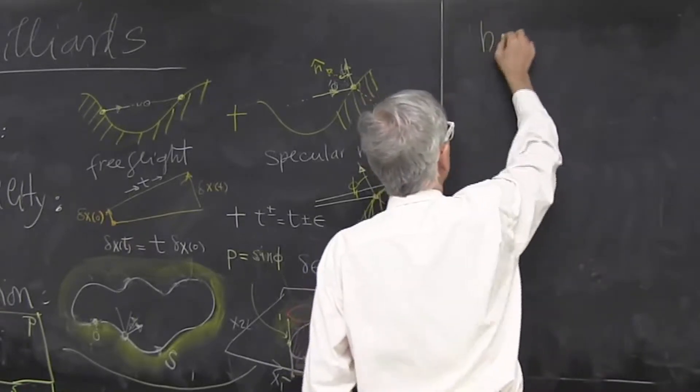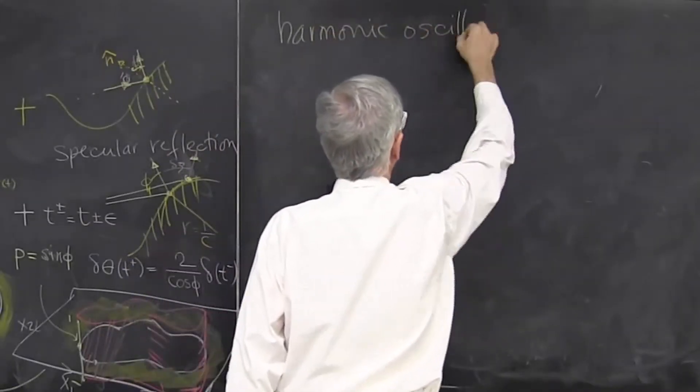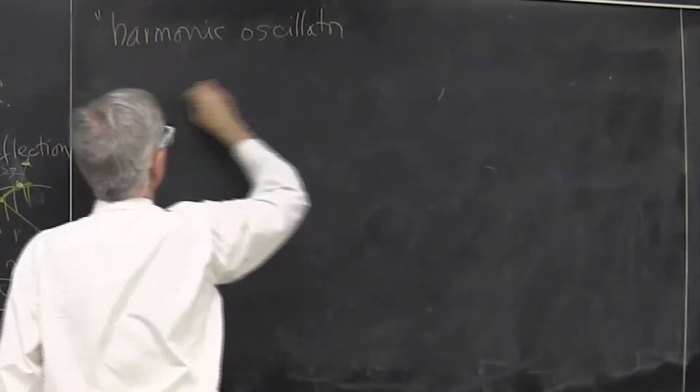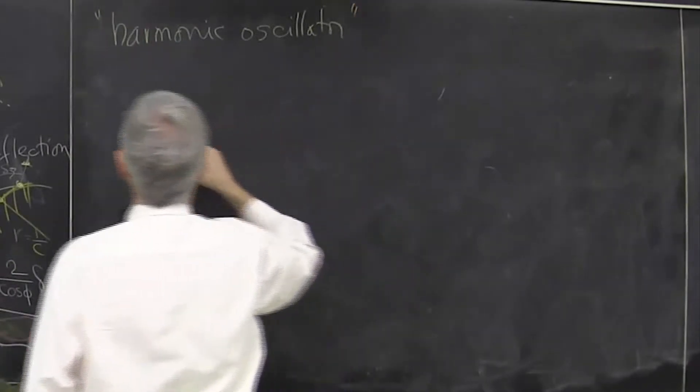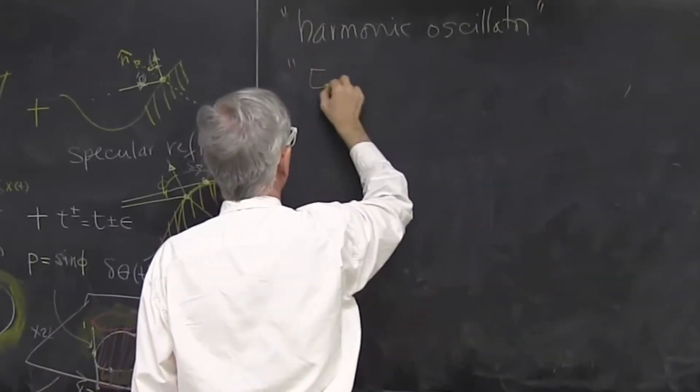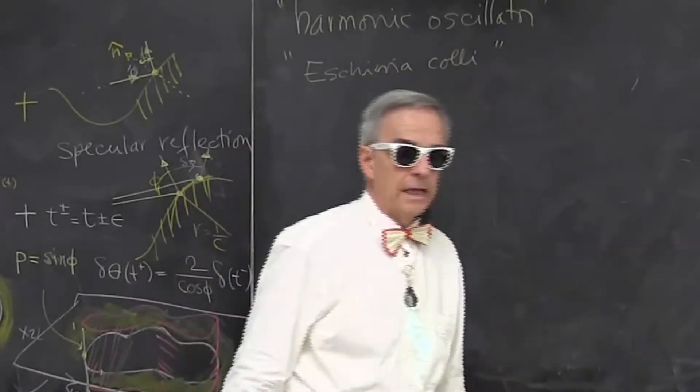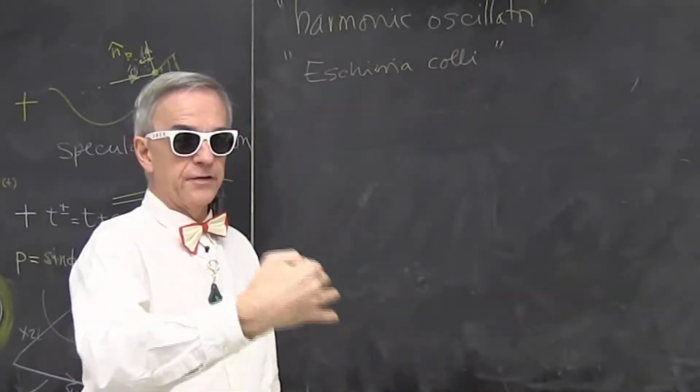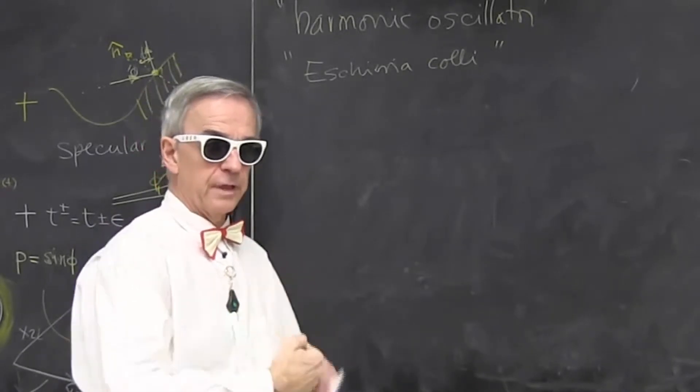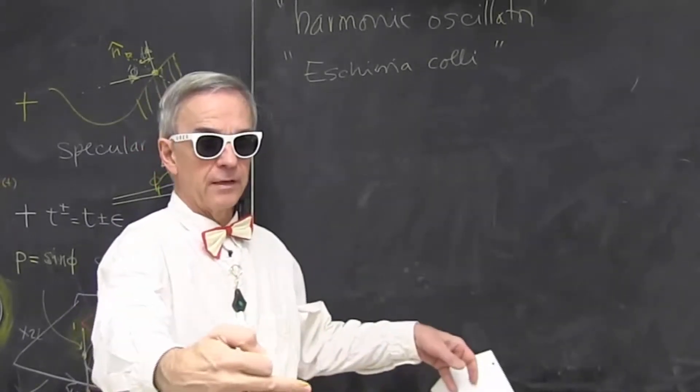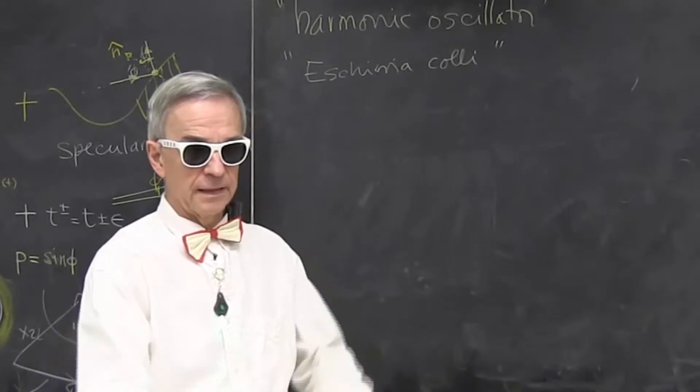So a harmonic oscillator, or if you're a physicist, if you're a biologist, then it's called Escherichia coli, a bacteria that's in your gut. You use one simple example to try to illustrate all the relevant phenomena in your subject.